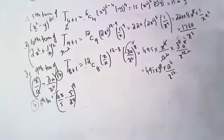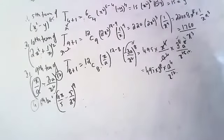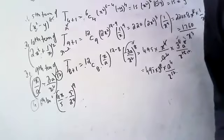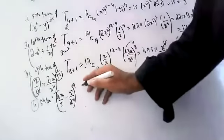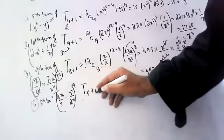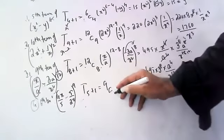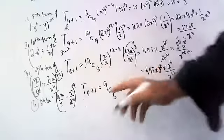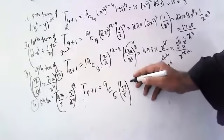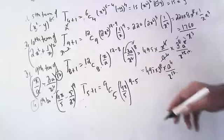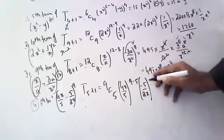Who will tell this one? T₆ = T(5+1), so r = 5. It is 9C5 · (4x/5)^(9-5) · (-5/2x)^5 = 9C5 · (4x/5)⁴ · (-5/2x)⁵.